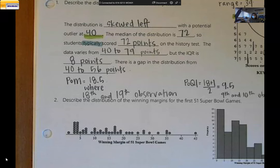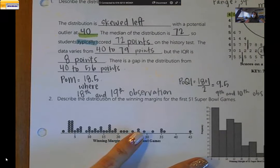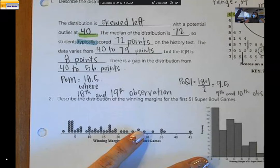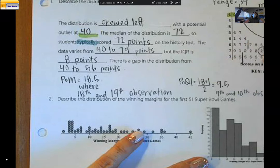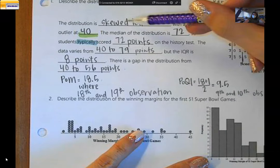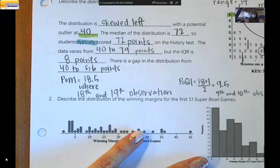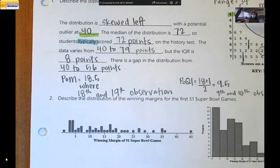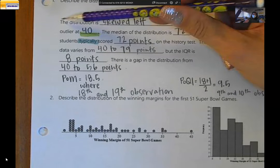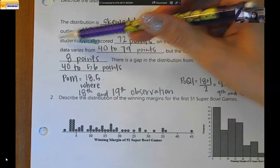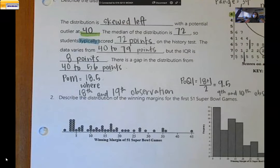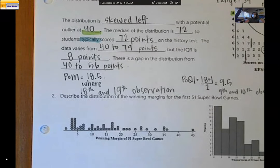Are you okay on this one? It seems like a lot because we had to calculate all this information. But once you start doing it on your own, I think you'll find it's easier than it feels right now. So we did shape, outlier, center, spread, and I highlighted that there was a gap. You could also say the distribution is skewed left with a gap from 40 to 56 and a potential outlier at 40. There are lots of different ways to write it.